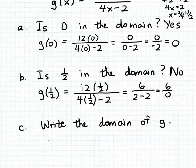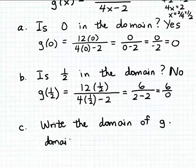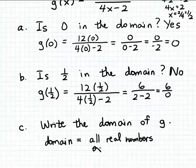So the entire domain of the function g would be the set of all numbers except for one-half. One way to write that is simply in words. There are other symbolic ways to express this set that we'll learn about later. But for the time being, we'll just verbally say that the domain of our function g is all real numbers except the bad value one-half.